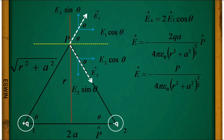The magnitude of the dipole moment is 2q·a, so 2qa · p-cap gives the dipole moment p-bar. For the special case where r >> a, the a² term can be neglected, and the electric field simplifies to E = −p-bar / (4πε₀ r³). This is the electric field at an equatorial point.